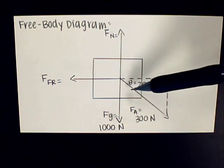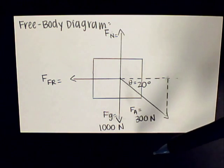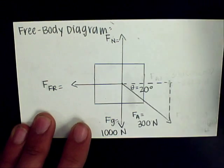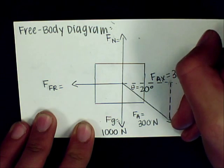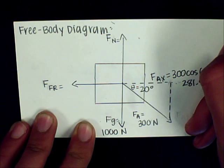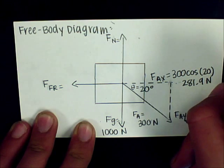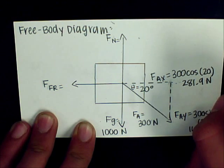Because the crate is moving at a degree angle, we cannot conclude that the normal force is equal to the force of gravity. Therefore, we have to use the components of the forces in the x direction and the forces in the y direction to find our normal force. The force applied in the x direction is calculated by taking 300 newtons times the cosine of 20 degrees, yielding 281.9 newtons. The force applied in the y direction is 300 times sine of 20, which yields 102.6 newtons.